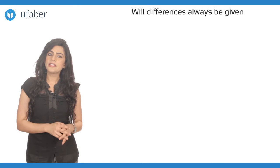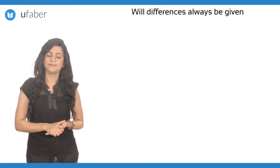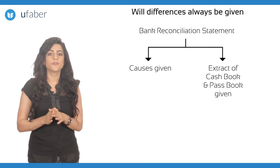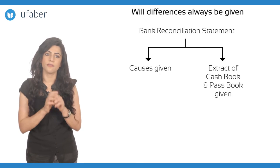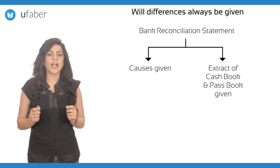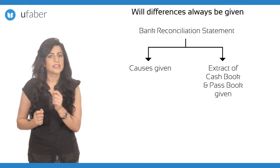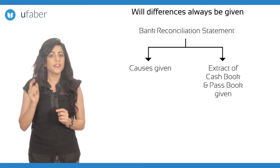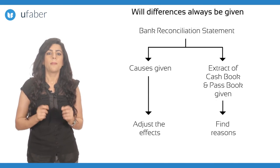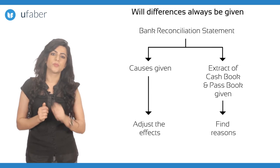Will the reasons for differences always be given? No, it is not always that the reasons for the differences are given. In some cases, an extract of the cash book and the bank's pass book is given, and the reasons for the differences have to be determined by analysing the entries appearing in both these books.